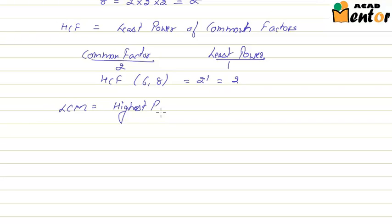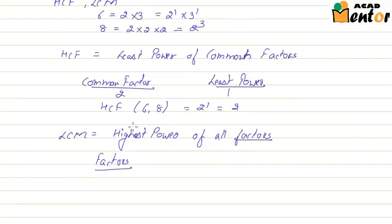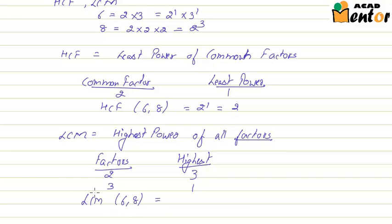For calculating LCM, we take the highest power of all factors — notice the difference: for HCF we took the least power, for LCM we take the highest power. The factors of 6 and 8 are 2 and 3. The highest power of 2 between 6 and 8 is 3, and the highest power of 3 is 1. So the LCM is 2 to the power 3 multiplied by 3 to the power 1, which gives us 8 multiplied by 3, which is 24.